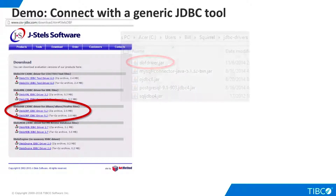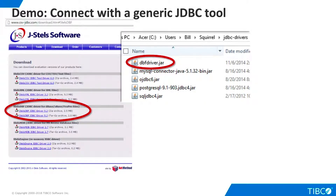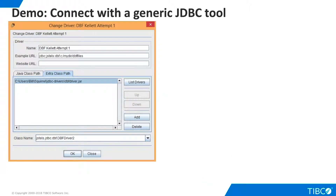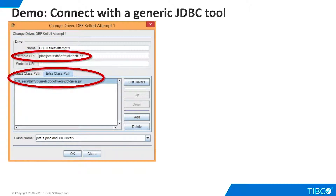We'll use a SQL utility called Squirrel for this step. We put the JSTELS JDBC driver into the appropriate directory in Squirrel, as shown here. Our driver download also includes some sample files we can use for testing. We put them into a convenient directory. Now we are ready to define a new driver in Squirrel. The example URL shown here was taken from the JSTELS documentation. We add the location of the driver to the Extra Class Path tab. Then we click List Drivers, and Squirrel finds the appropriate class name for us.